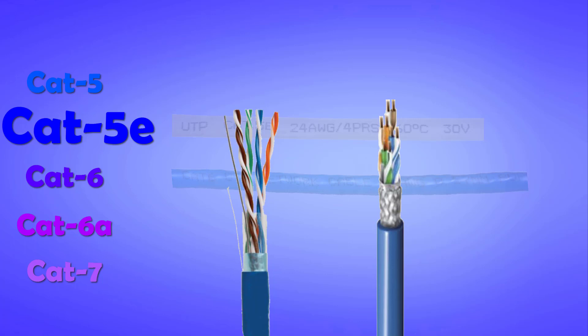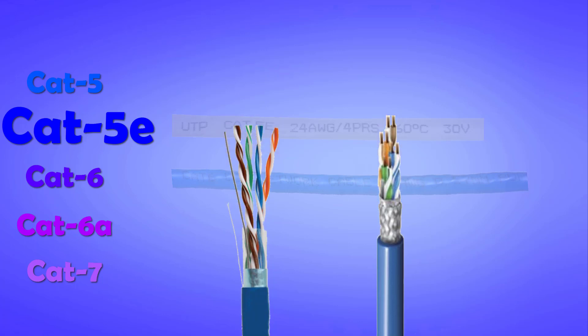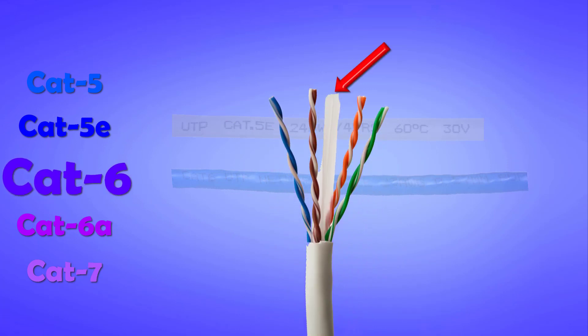Since the beginning of the Ethernet age, around 1988, Cat5 had been connecting the world for at least up to 2002. But after that, when 100 Mbps got insufficient, a separator core, also called star filler, was added into the conductors of Cat5e and it was called category 6 Ethernet cable.